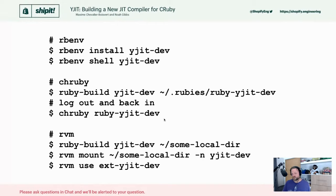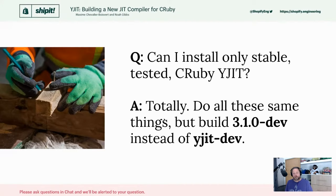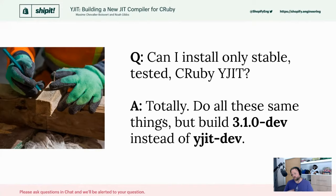For RVM, there's a bit more setup to add an externally built Ruby. You run 'ruby-build yjit-dev' to a local directory, then 'rvm mount' that directory with '-n' for a name. To use it you prefix with 'ext-': 'rvm use ext-yjit-dev'. All of this is standard Ruby build stuff — same process for any version manager. If you want stable tested YJIT, you can say '3.1.0-dev' in Ruby build instead of 'yjit-dev', and that will give you the pre-release 3.1.0 Ruby which now has YJIT merged into it.